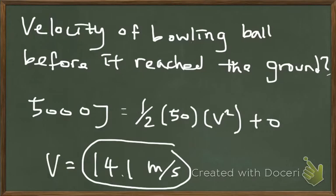Now all I have to do is calculate the kinetic energy part, divide 25 on both sides, and take the square root of both sides of the equation. I'm left with 14.1 meters per second as the velocity.